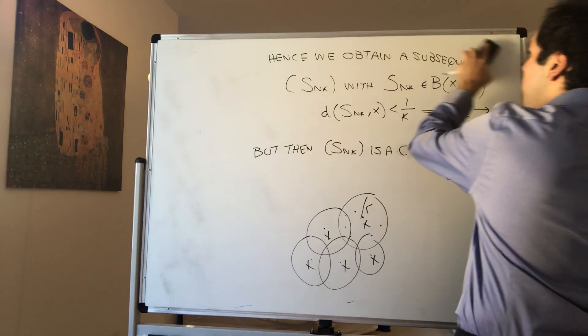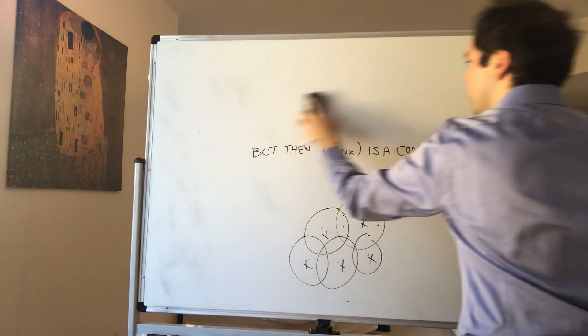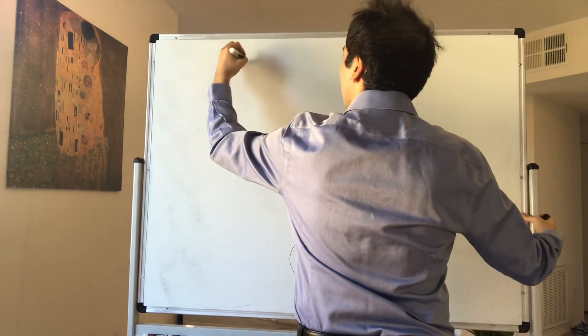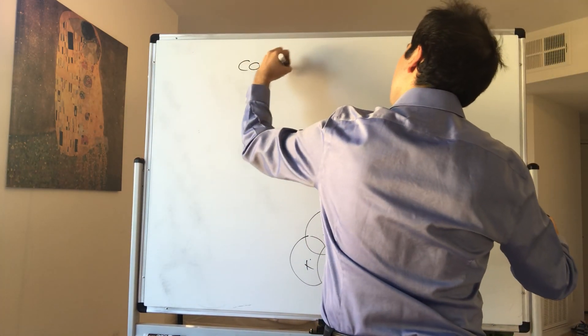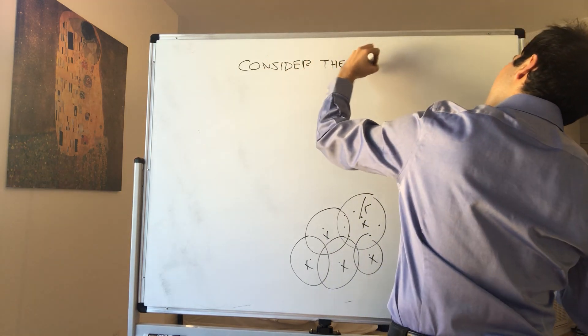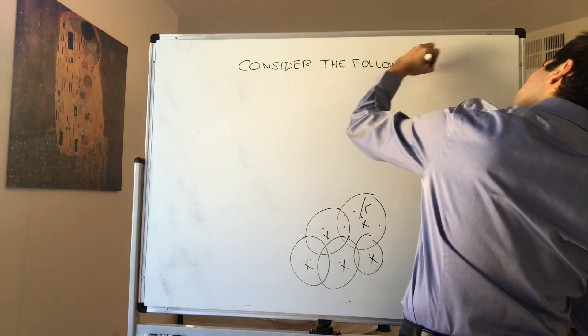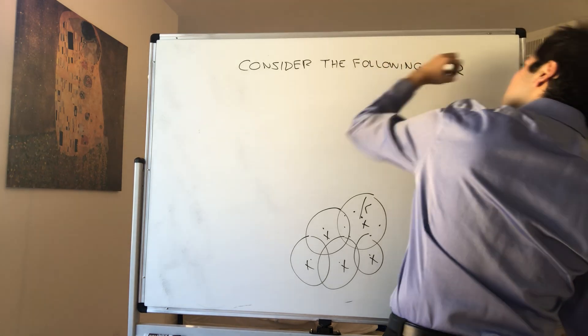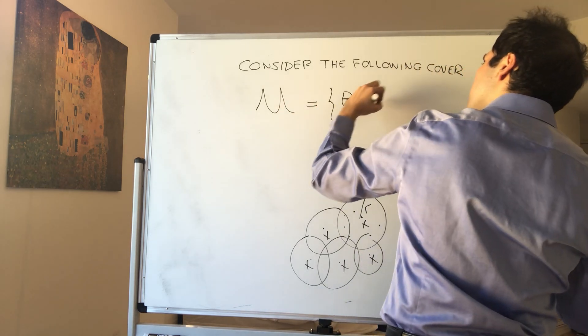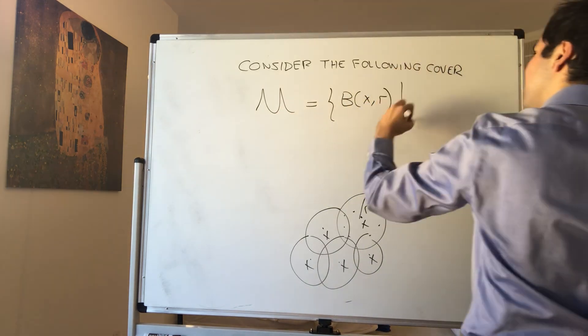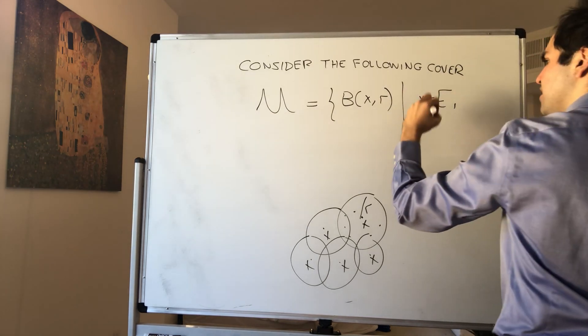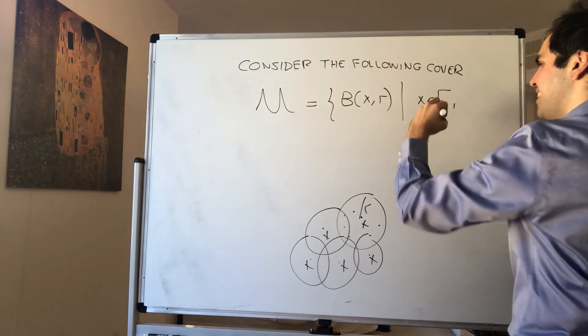So now, cover, consider the following cover. So let U just be the set of balls centered at X and radius R, where X is in E, and R is as in the claim.